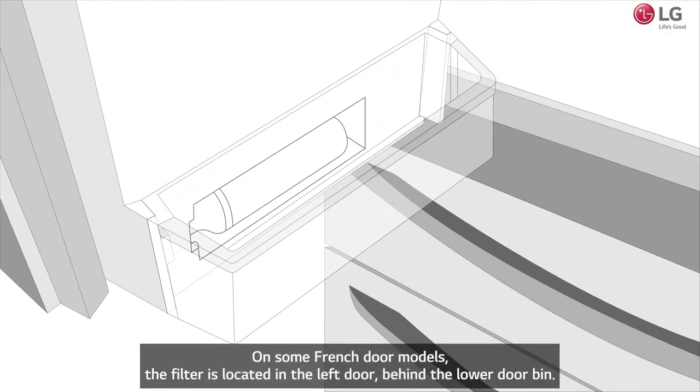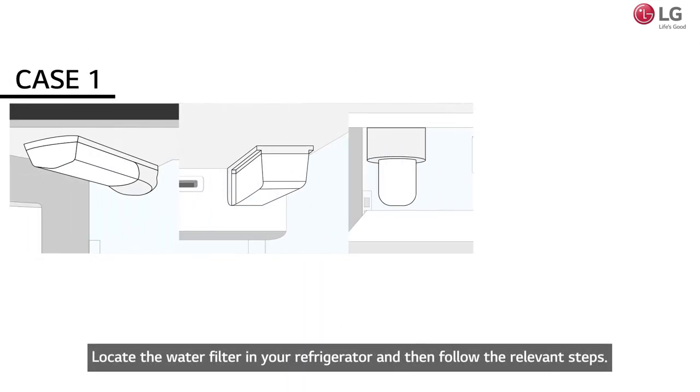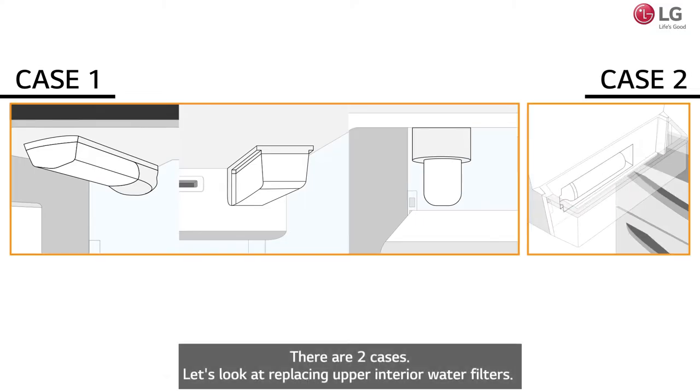On some French door models, the filter is located in the left door, behind the lower door bin. Locate the water filter in your refrigerator and then follow the relevant steps. There are two cases. Let's look at replacing upper interior water filters.